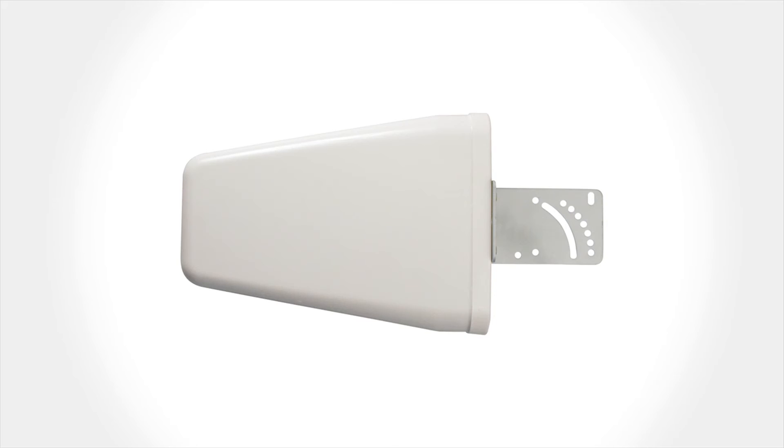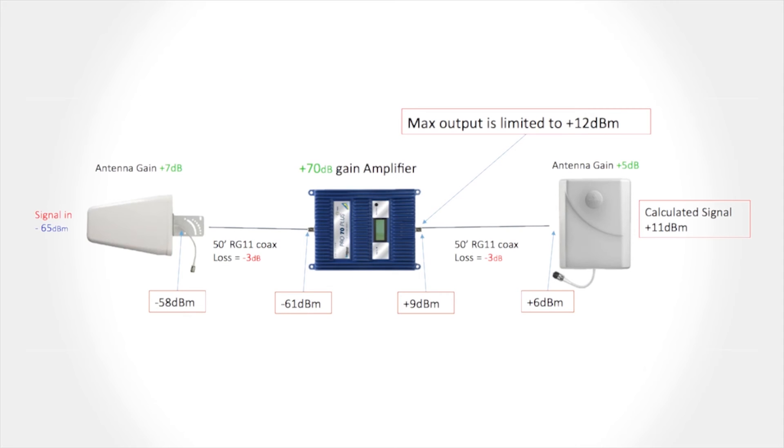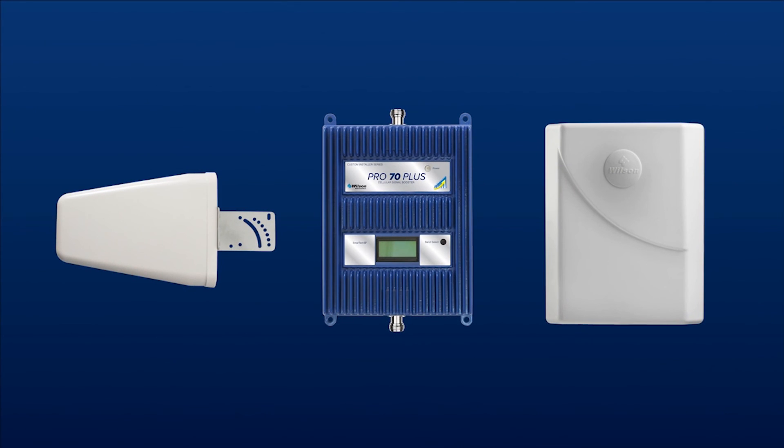There are several types of antennas, both external and inside, and all types of configurations you can do with these components. We'll get into all this in other videos, but it all comes back to these three pieces. Once you understand how a basic cellular system works, you can expand from there.